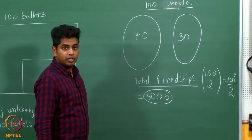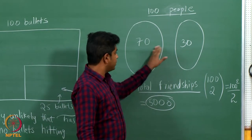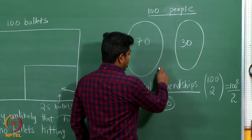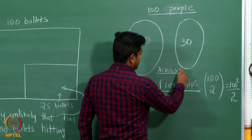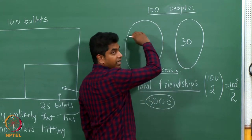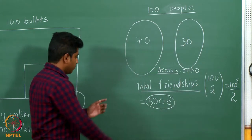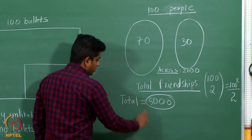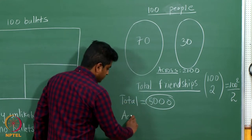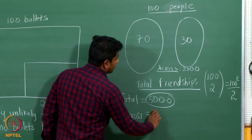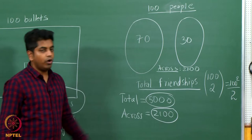Out of which there are some friendships within, within, within. There are some friendships across. Let me see how many friendships are across. Across friendships are simply 70 into 30, which is 2100. What do I mean by this? Let us take a pause and understand what I have done so far. Total possible friendships are 5000, but the friendships across are 2100 in number.